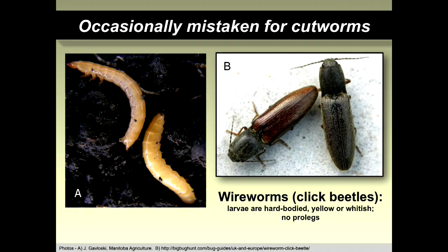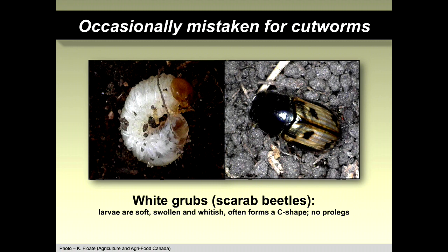Many things are brought into the station that people think are cutworms but are not. Wireworms have a head capsule and three pairs of true legs, but no prolegs on the abdomen — so they're not cutworms. They develop into click beetles, which are also an important crop pest. Beetle grubs (such as dung beetles that breed in soil) also have a head capsule and true legs but no fake legs, and they form a C-shape in soil. At densities of a few hundred per square meter they can cause crop damage, but they're not cutworms.